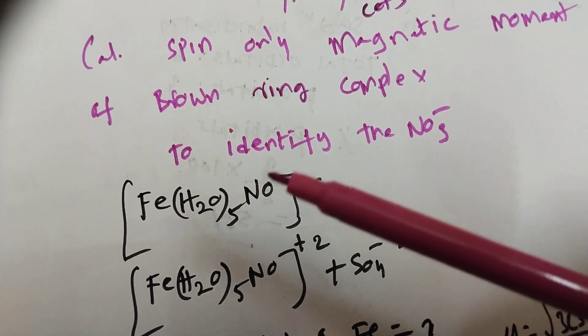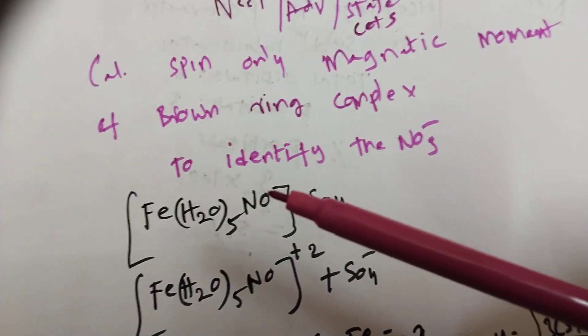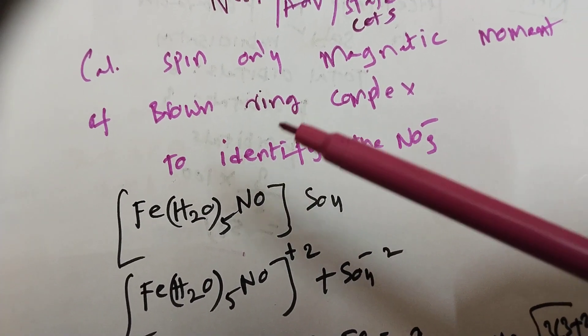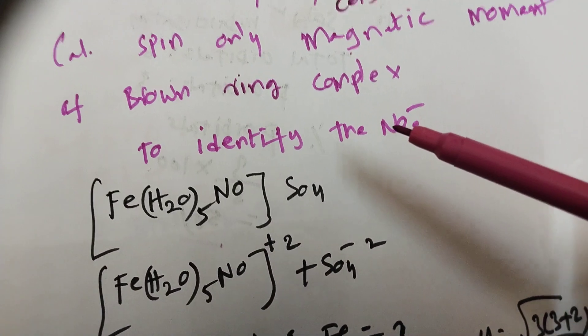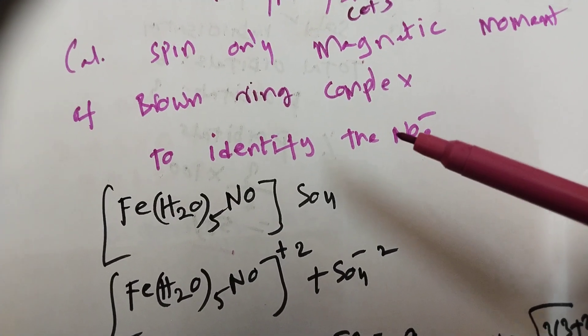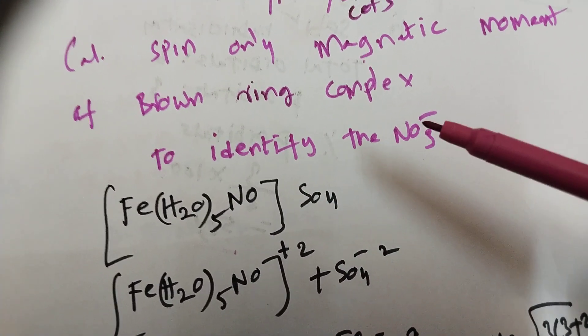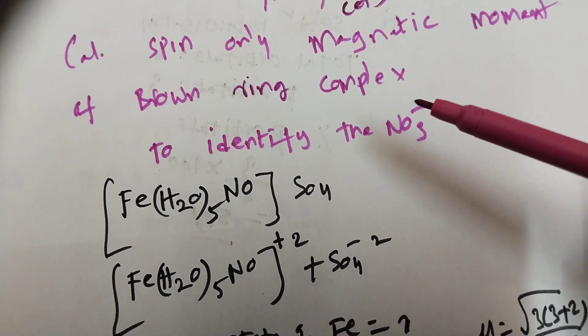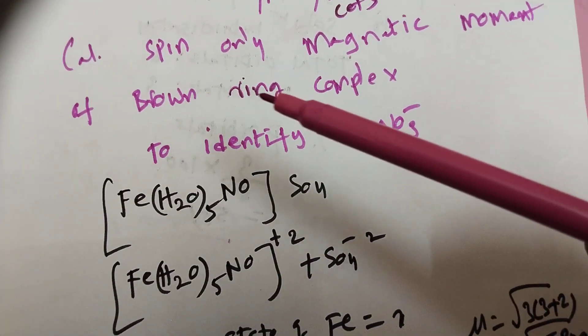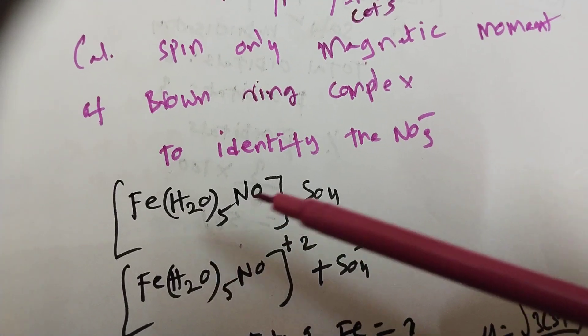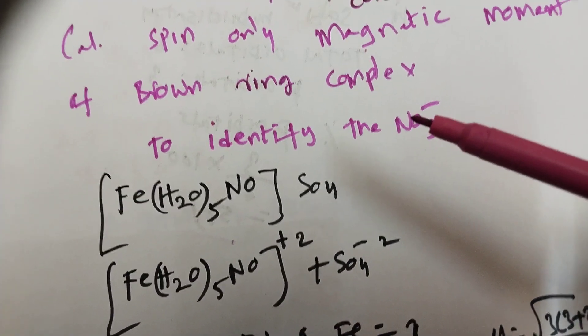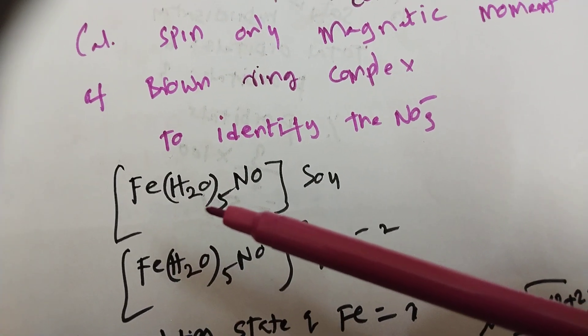At the same time, we have 15th group elements which are used to identify the nitrate ions in a given salt. That is the brown ring test, which is the confirmation test to identify the nitrate ions. What is the formula of brown ring complex?